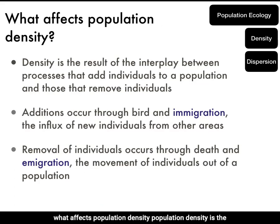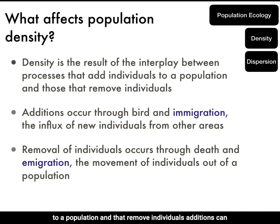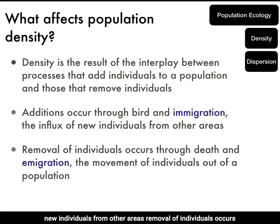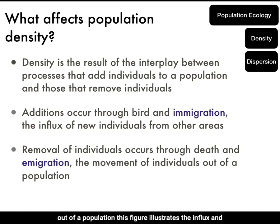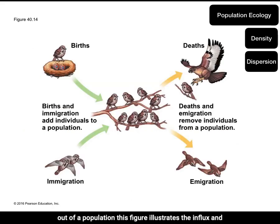What affects population density? Population density is the result of an interplay between processes that add individuals to a population and those that remove individuals. Additions can occur through births and immigration, which is the influx of new individuals from other areas. Removal of individuals occurs through death or emigration, which is the movement of individuals out of a population.